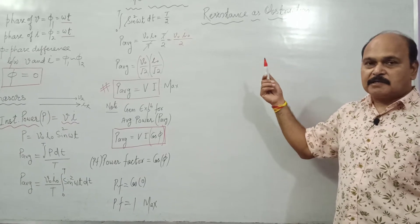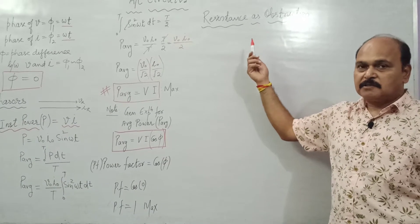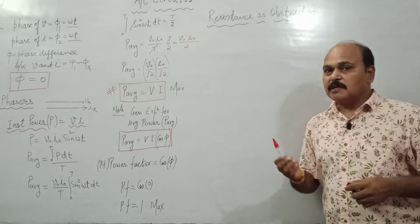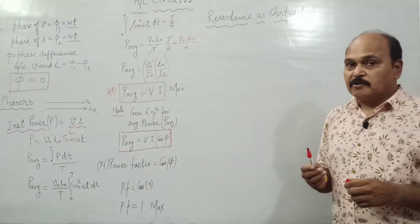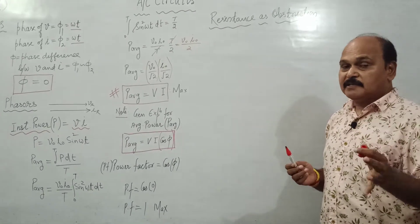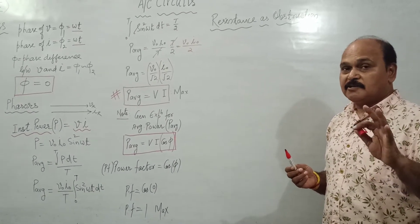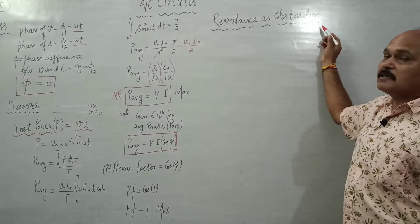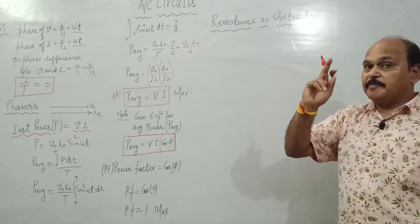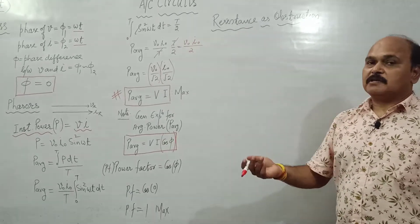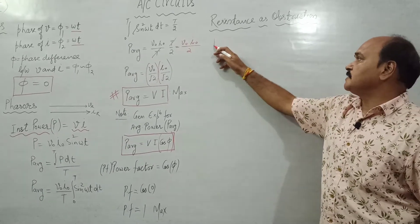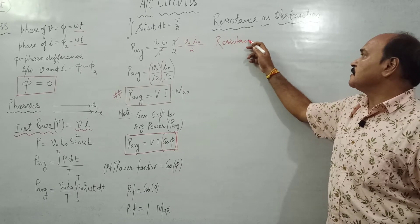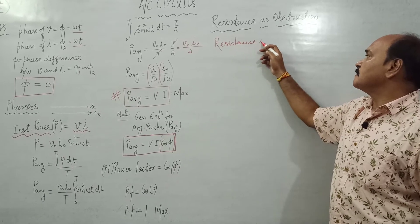Let us understand resistance as obstruction. We have been knowing resistance as obstruction to current, but now we define it in terms of frequency: resistance is an obstruction to current which does not depend upon the frequency of current.